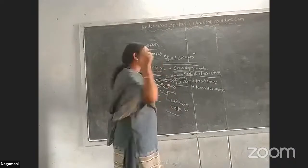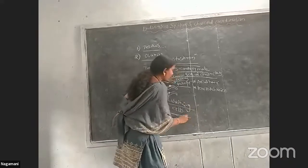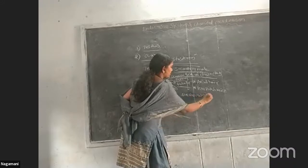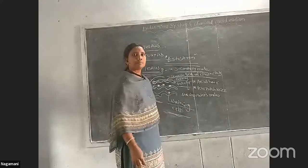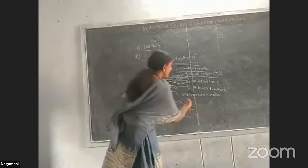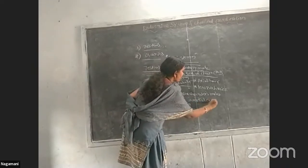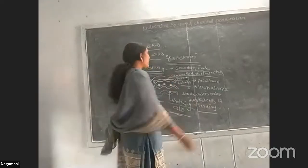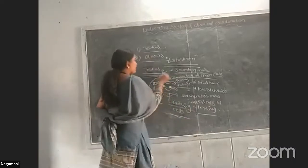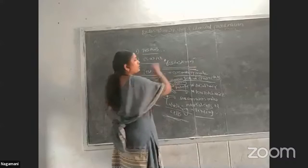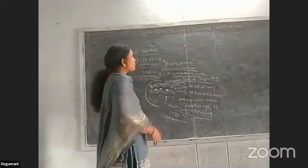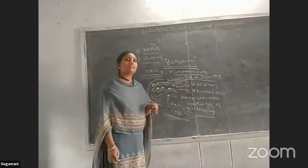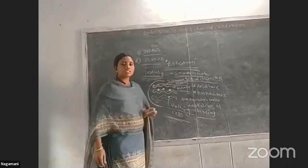The interstitial cells of Leydig are also very important for controlling the secondary sexual characters in males. When there is a lack of testosterone, males go into a sterility condition. This is all about the testes.